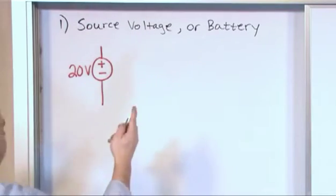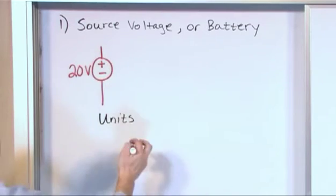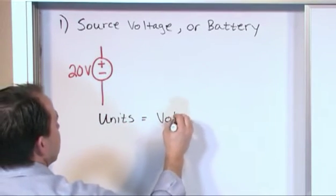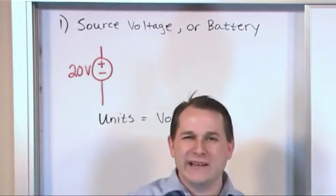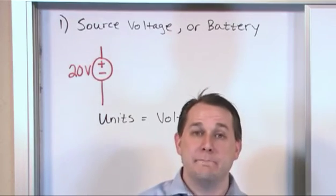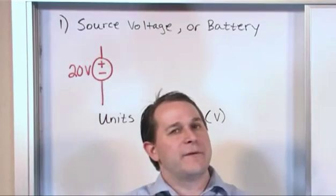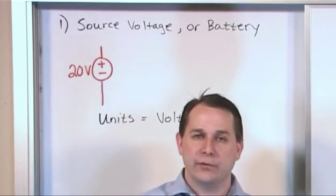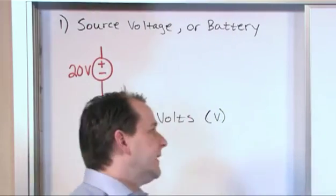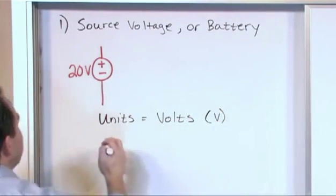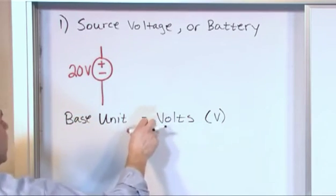We've already talked about that. The units when you're talking about a source voltage is volts (V). Just keep in mind that if you have a really teeny tiny source you might be talking about millivolts or microvolts or nanovolts. If you have a very large source, very high voltage, you might have kilovolts or megavolts or even gigavolts. So you're using the metric system but the base unit is the volt.